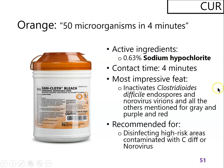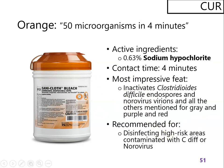What kills endospores is bleach, and the orange product is bleach. Its active ingredient is 0.6% sodium hypochlorite — that's 10% bleach. Even so, it requires a four-minute contact time, but it can kill endospores, norovirus virions, and all the other microorganisms covered by the red and purple products. This is what you would ideally use to clean up after patients who have norovirus or C. diff.